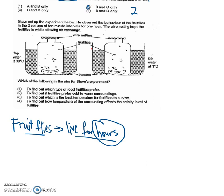Let's look at this experiment carefully. First of all, you have netting over here. The netting is the same kind of netting. Fruit flies, same number of fruit flies, banana over here, ice water at one degree Celsius and tap water at 30 degrees Celsius.